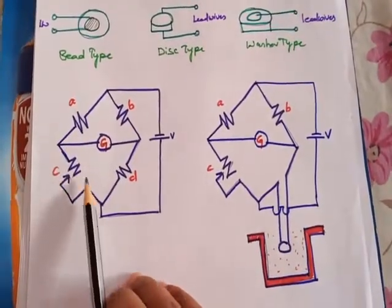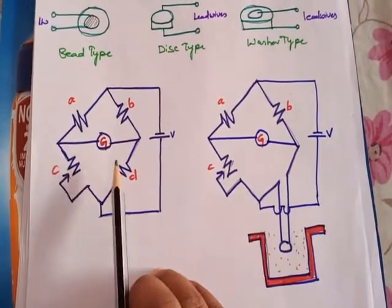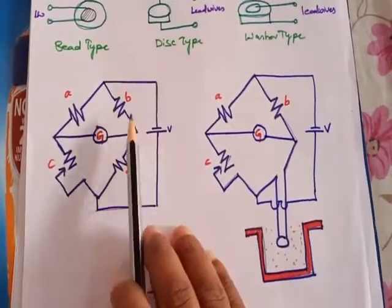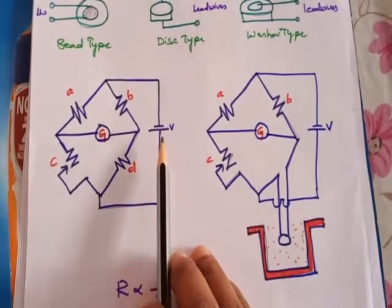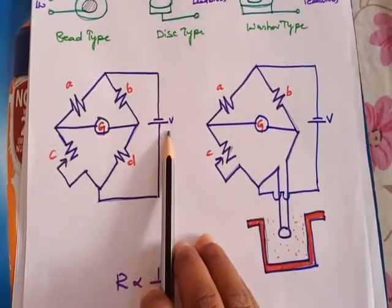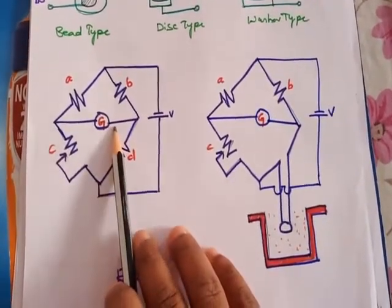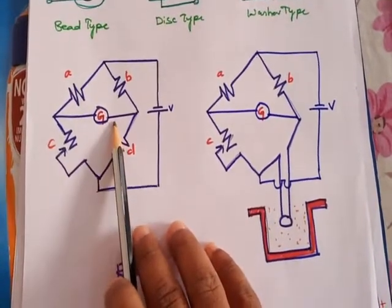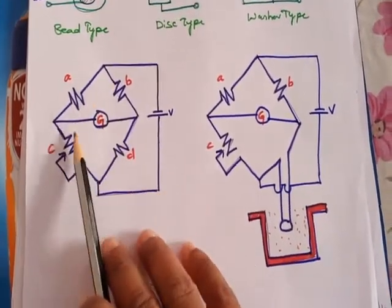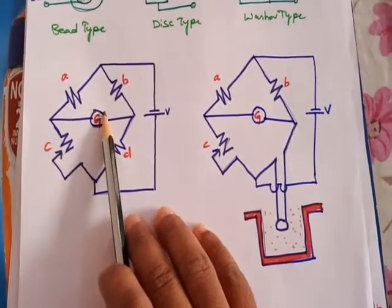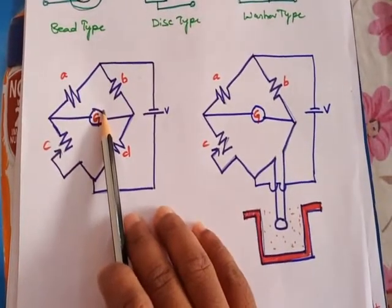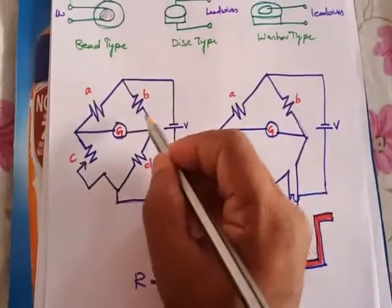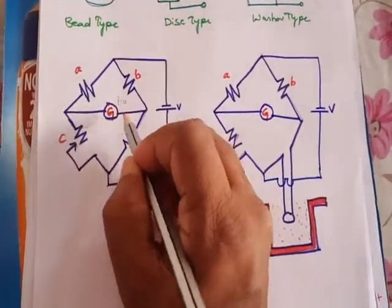Where C is called the adjustable resistor. These are the two terminals where the voltage supply is connected. Under normal conditions, as soon as you give some supply, the galvanometer starts deflecting and shows some current value. Whenever the bridge has to come into balanced condition, you have to make the galvanometer show zero deflection — that is, current I equals zero.